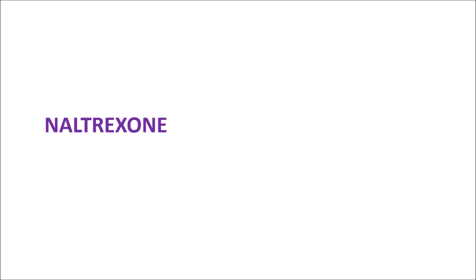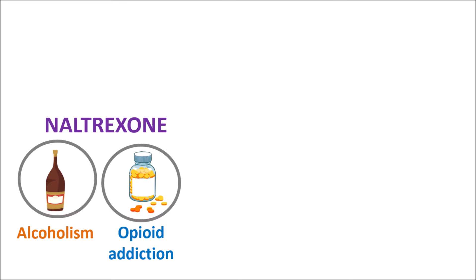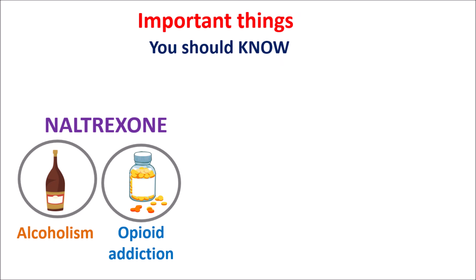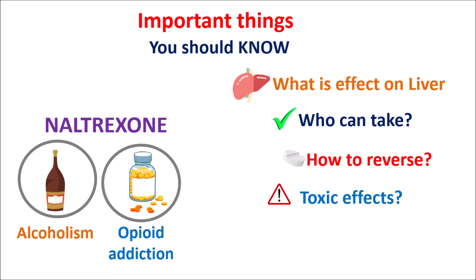Naltrexone is one of the medications which can be used for the treatment of chronic alcoholism. It can also be used for the treatment of opiate addiction. Naltrexone can reverse addiction towards alcohol or opiates. But before taking Naltrexone, you should know important things such as the effect of this drug on the liver, who can take this medication, how to reverse the effect of Naltrexone under emergency conditions, what are the toxic effects, and what to avoid while using Naltrexone.